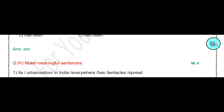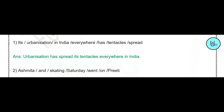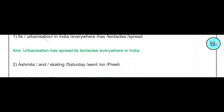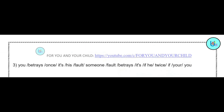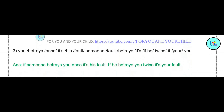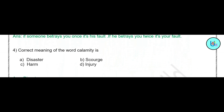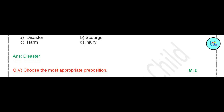Question number 4: make meaningful sentences. Some jumbled words are given; you have to arrange them in the correct sequence to form a meaningful sentence. First answer: 'Urbanization has spread its tentacles everywhere in India.' Next answer: 'Ashmita and Preeti went skating on Saturday.' Next: 'If someone betrays you once, it's his fault. If he betrays you twice, it's your fault.' The correct meaning of the word 'calamity' is disaster.